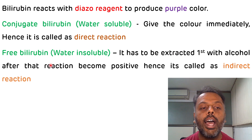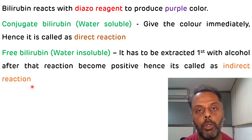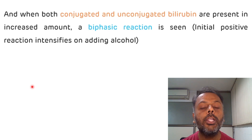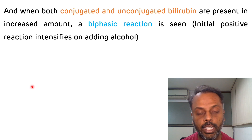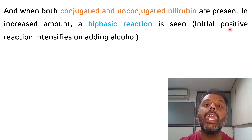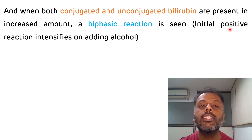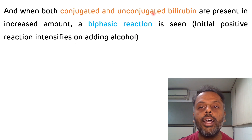For this reason, unconjugated bilirubin or free bilirubin is also known as indirect bilirubin. When both conjugated and unconjugated bilirubin are present in the serum in increased amounts, a biphasic reaction is seen. The initial positive reaction intensifies after adding alcohol — that is known as the biphasic reaction, because the initial positive reaction is given by conjugated bilirubin, and the color intensifies after adding alcohol due to the unconjugated bilirubin. That is the meaning of biphasic reaction.